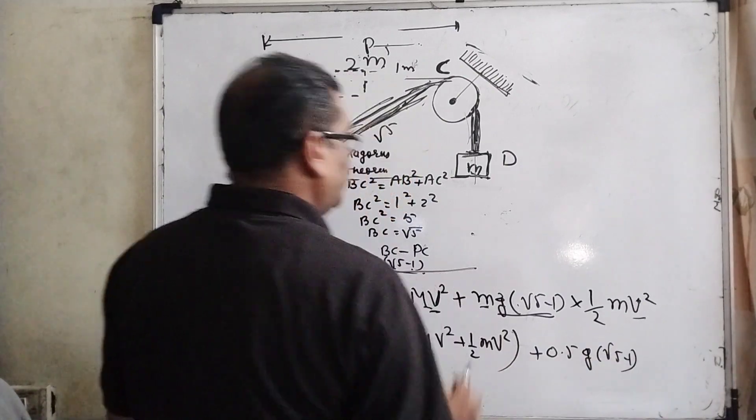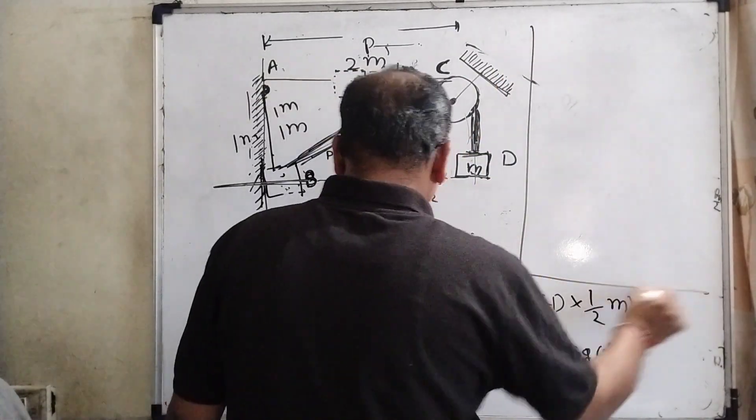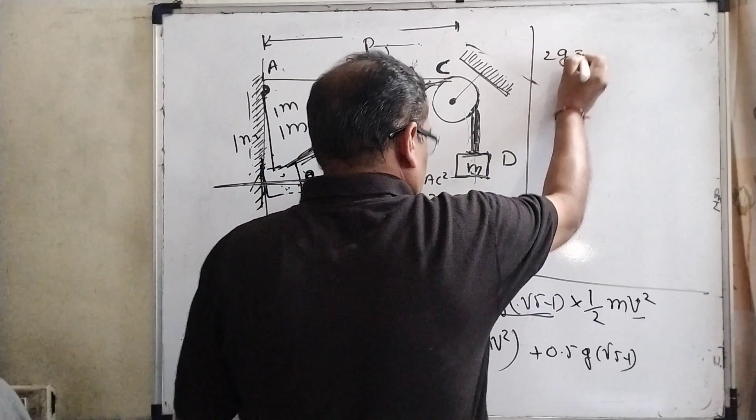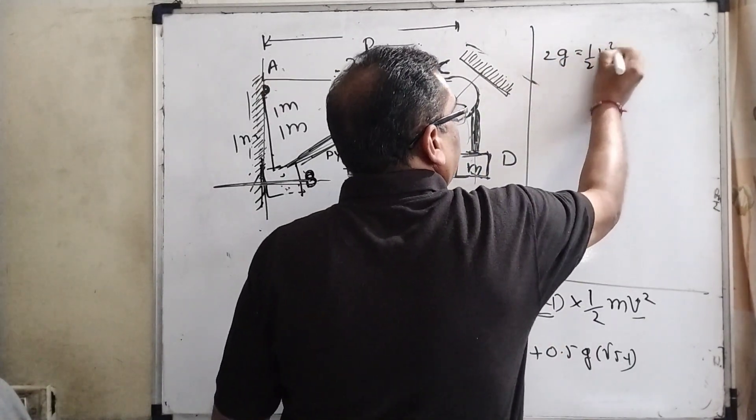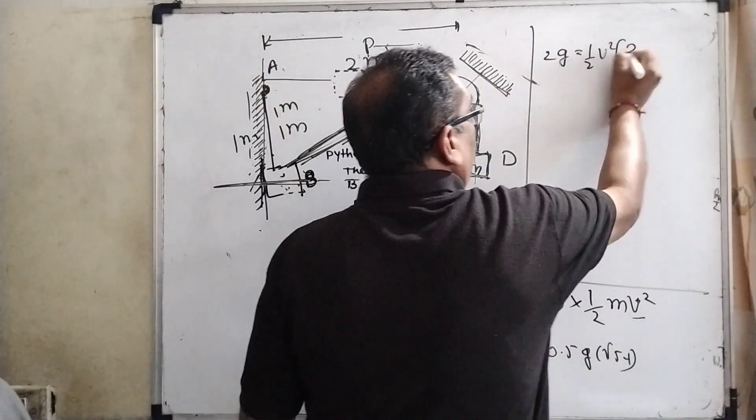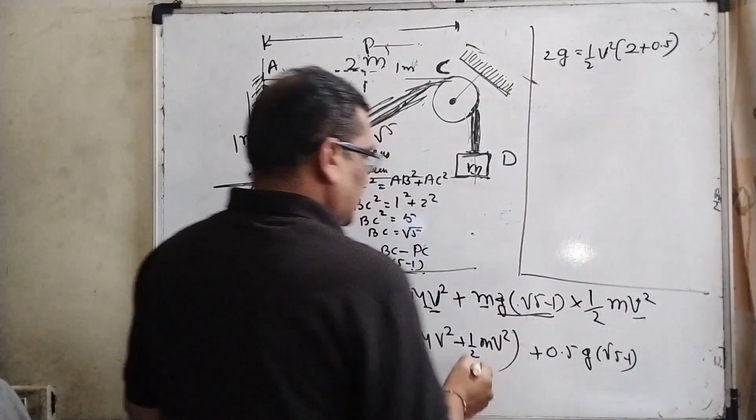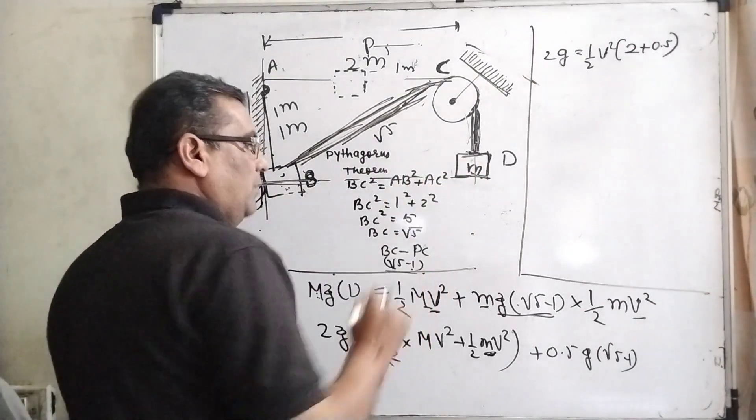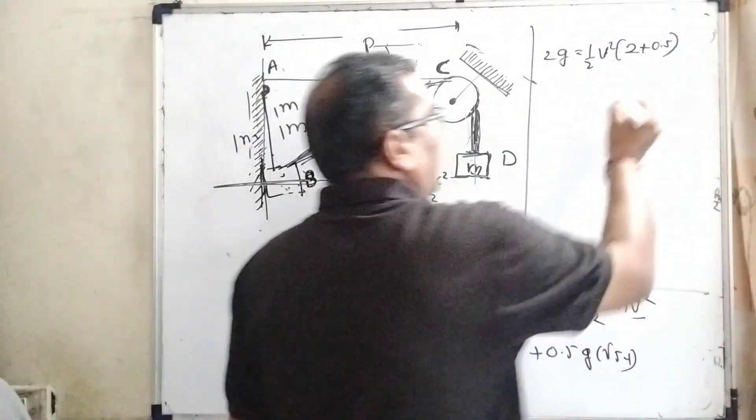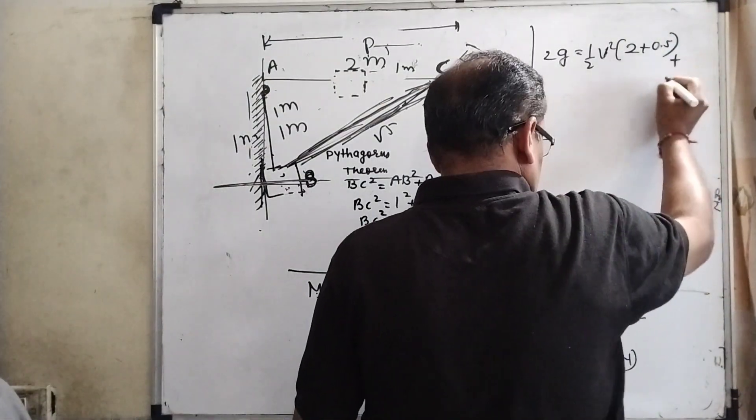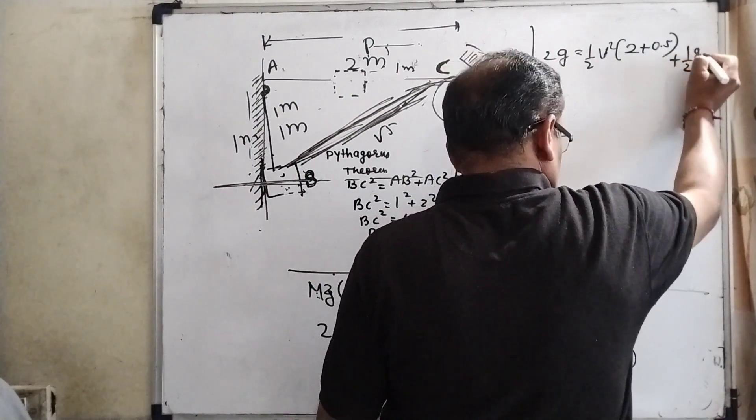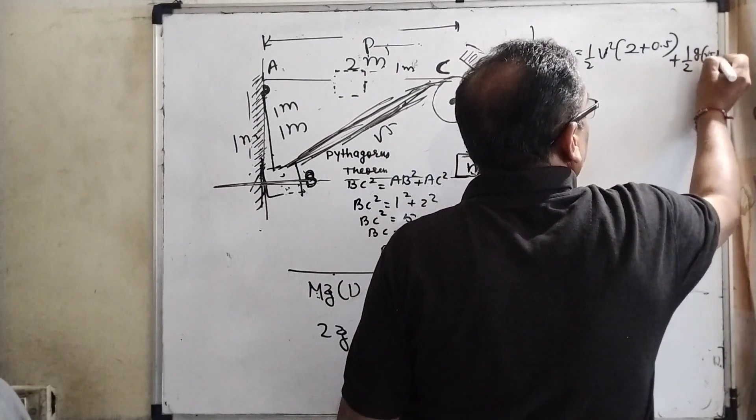Mv squared and this half M capital v squared put together. Here the mass is 0.5g times root 5 minus 1. Now 2g here, half mv squared get common, 2 plus 0.5. 0.5 is the mass of this small block.